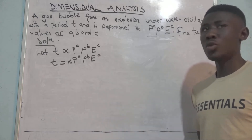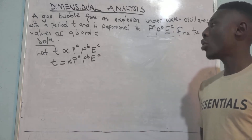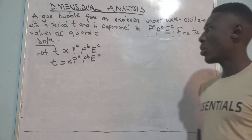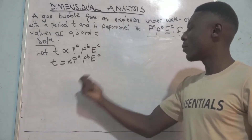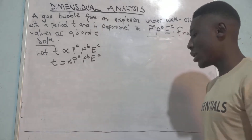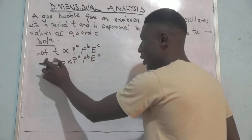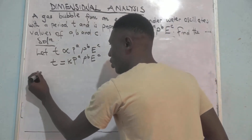From here, there is nothing we can do until we find the dimensions for a, B, and C. So we are going to perform dimensional analysis — finding the dimensions for time, pressure, density, and energy. For time, the dimensions are M to the power 0, L to the power 0, T to the power 1.